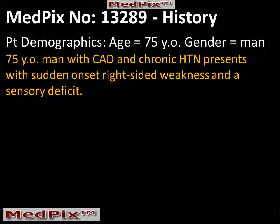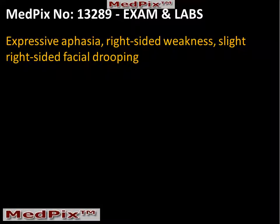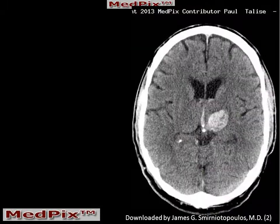Our patient this week is a 75-year-old man with a history of coronary artery disease and chronic hypertension. He presents with a sudden onset of right-sided weakness and a sensory deficit. Clinical examination confirms his right-sided weakness. He also has a right-sided facial droop and an expressive aphasia.